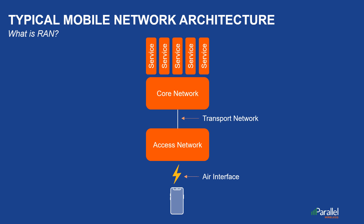This is what a typical mobile network looks like. You have the core network connected to the access network via transport network or backhaul. The RF transmission from the access network allows your smartphone or any other device to connect to the network. There are many different services that can be offered by the network, shown here on top of the core network.